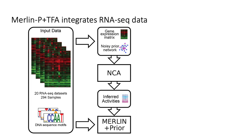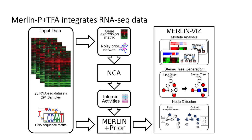Once we have the inferred activity, we apply MERLIN-P to generate the gene regulatory network. Finally, we use our visualization framework called MERLIN-Viz to generate an interactable HTML applet. MERLIN-Viz incorporates multiple mechanisms for interacting with the GRN. These methods are packaged in a user-friendly interface that enables hypothesis generation.